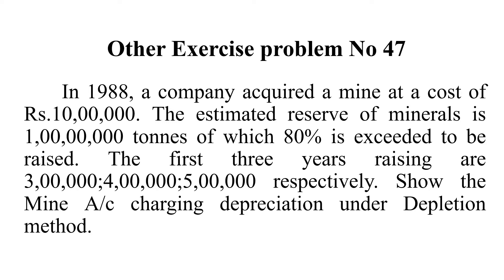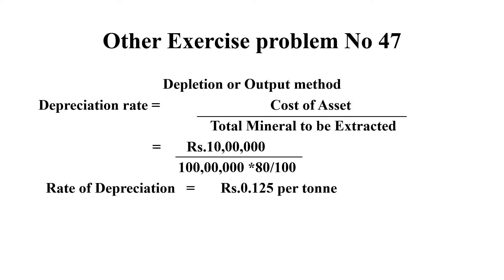In the first three years we have to extract three lakh tons, four lakh tons, and five lakh tons. So we have to calculate depreciation using the depletion or output method. The formula is: cost of asset divided by total minerals to be extracted. The cost of asset is 10 lakh rupees. Total minerals are 1 crore tons, but already 20% has been taken by the owner, so we use 80% of one crore.